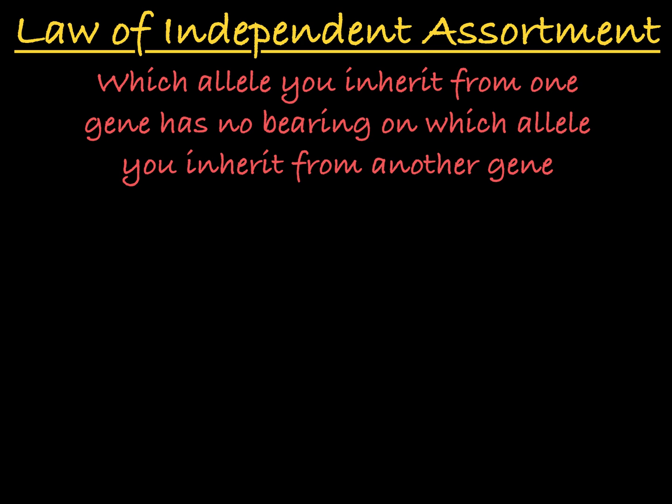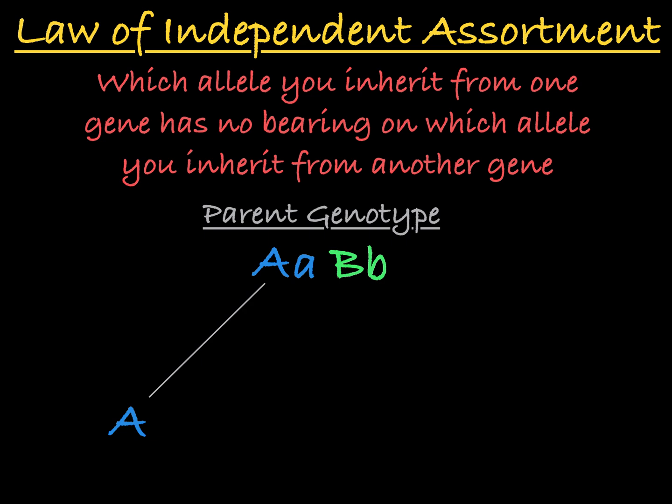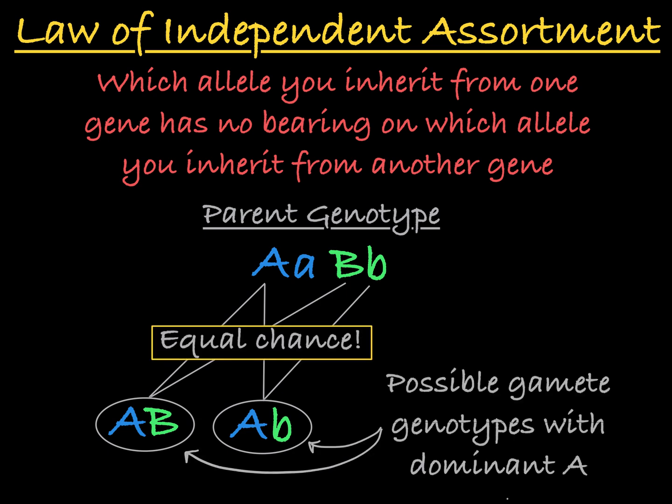For example, if you're dealing with two genes — gene A and gene B — and you are heterozygous for both genes, if you pass on the dominant allele of gene A into a gamete, you are equally likely to pass on the dominant or the recessive alleles for gene B.